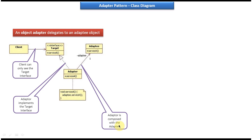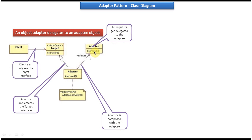The adapter is composed with the adaptee, meaning this adapter has a reference to the adaptee object. Finally, all requests get delegated to the adaptee — meaning the client will call the adapter, the adapter will do any conversion if needed, and then it will make a call to the adaptee. So that is the object adapter class diagram. An object adapter delegates to an adaptee object.